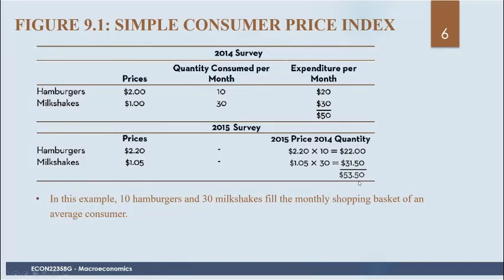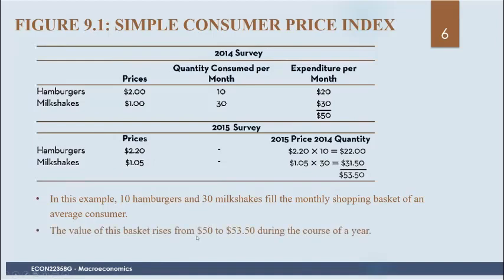If we used the 2015 quantities, both prices and quantities would be changing, but we're interested in just how prices change. So holding quantities fixed, the value of the basket rises from $50 to $53.50 over this year. Now, how do we get a price index out of this information?